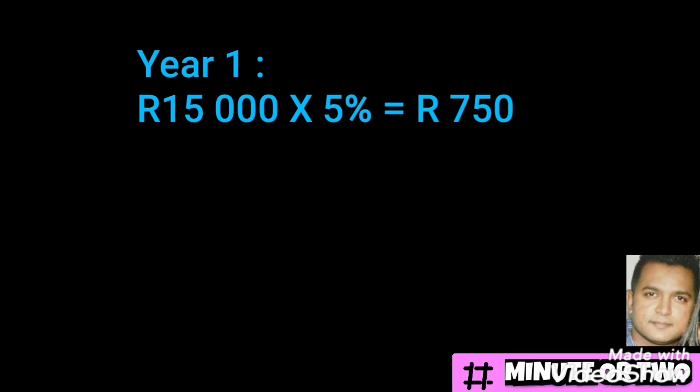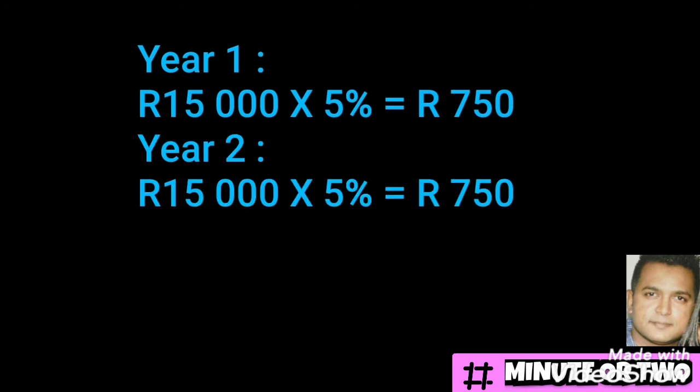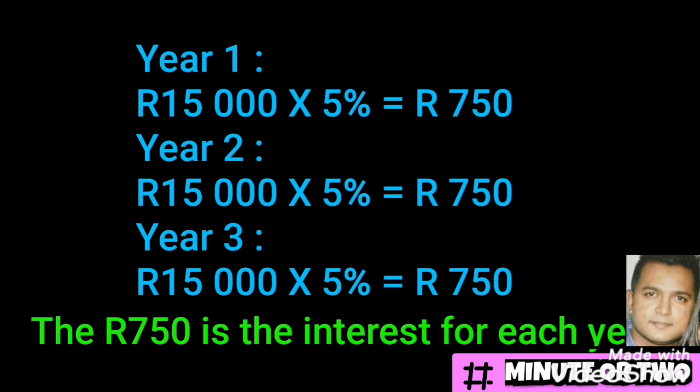For year one, it will be five percent of fifteen thousand — punch this directly into your calculator, making sure you include the percentage sign. You will get seven hundred and fifty as your answer for the first year. With simple interest, it is the same calculation for the entire three years — you're just finding five percent of fifteen thousand for each year, so we do the same thing for year two and year three.